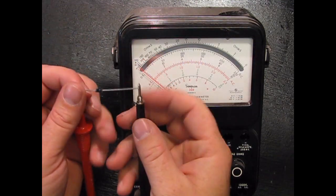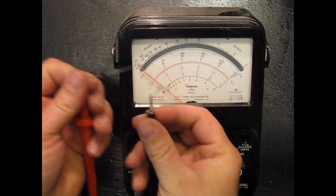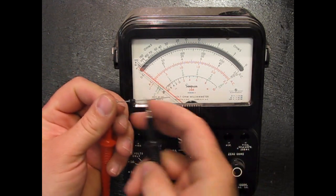Here's a quick illustration of how you can test a diode with an analog meter. I've got it on Rx1.